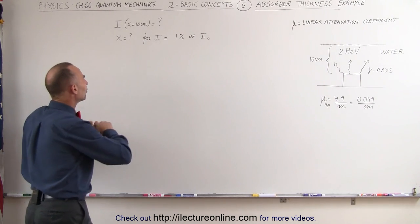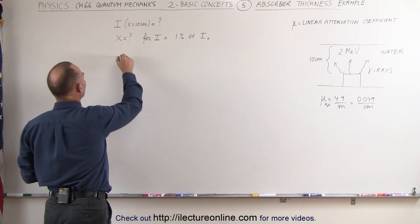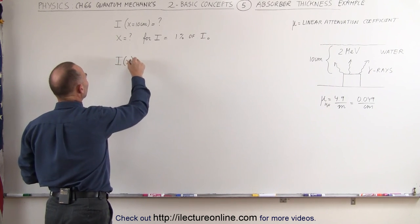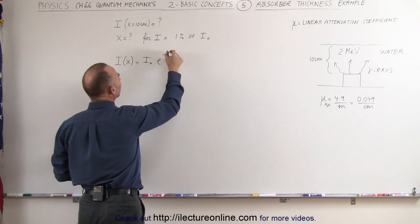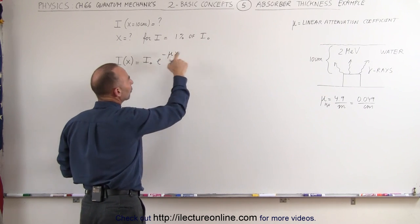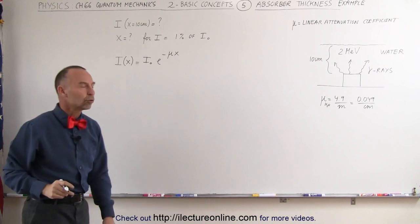The equation that we need for that is the following equation. The intensity as a function of thickness is equal to the original intensity as it leaves the source times e to the minus mu times x. Mu of course is the linear attenuation coefficient.